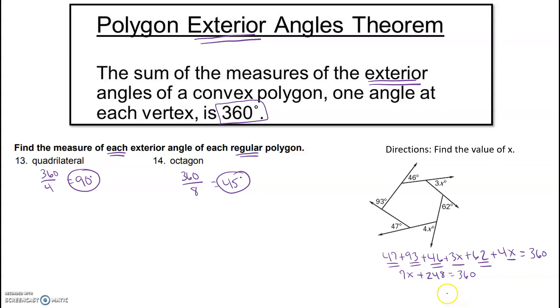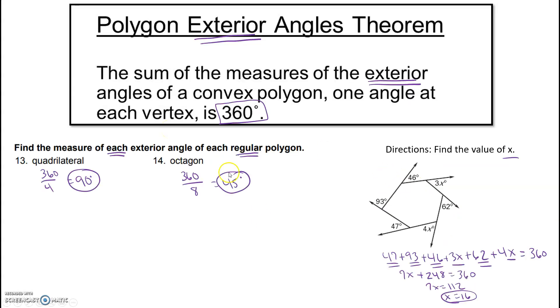Then we're going to subtract 248 from both sides, so we get 7x equals 112. We're going to divide by 7 and we get x equals 16. Again, this did ask for the value of x, so we're done. This one's 16. If you had to find this angle, you would do 3 times 16. If you had to find this angle, 4 times 16. But again, always add up to 360.